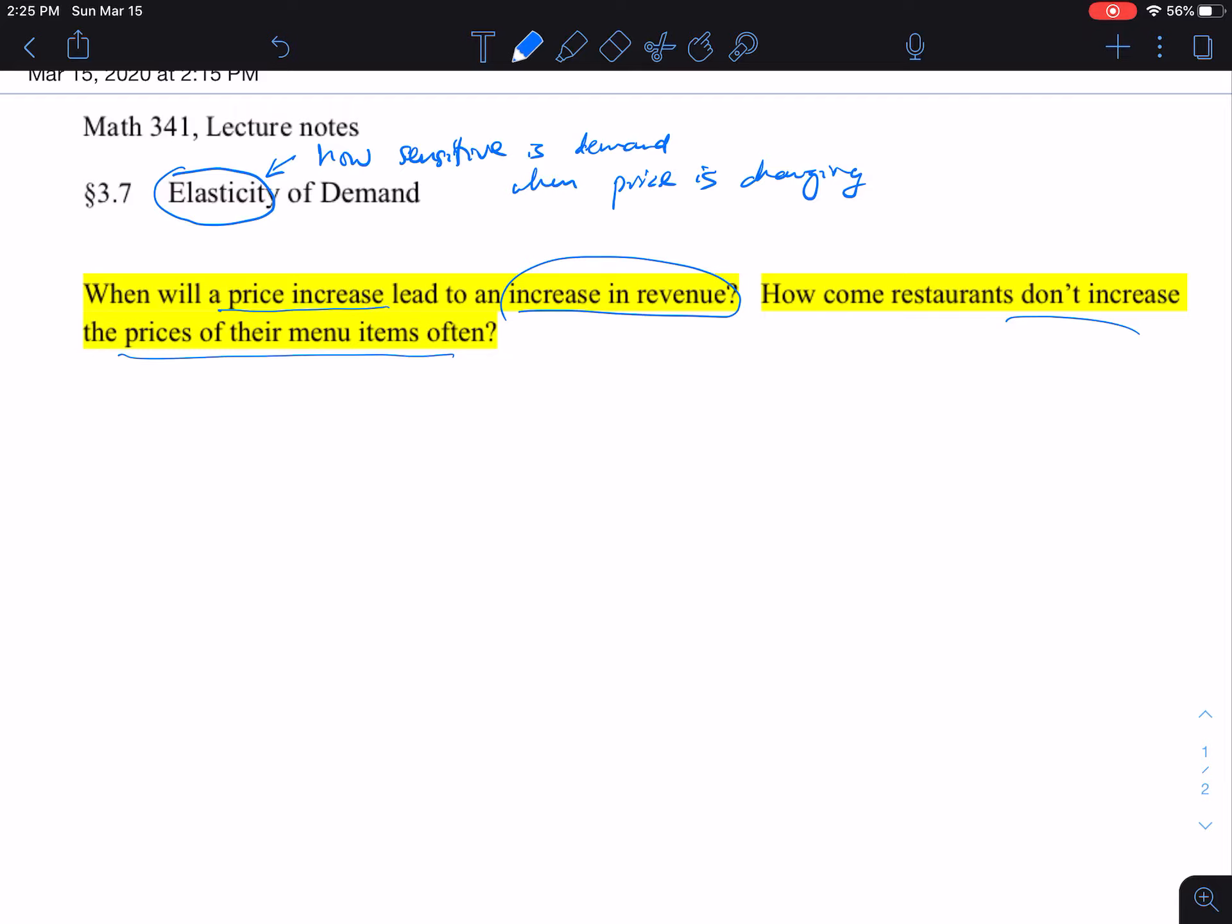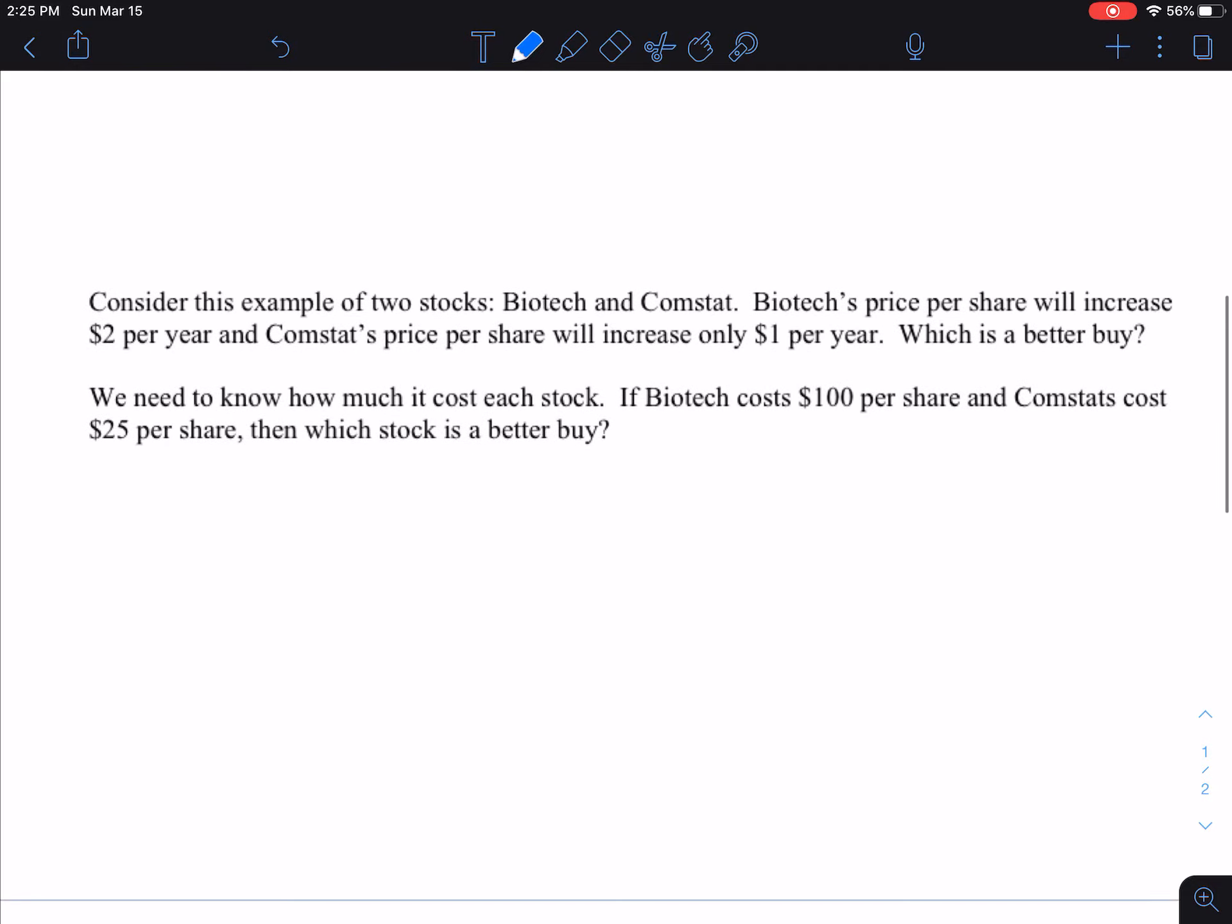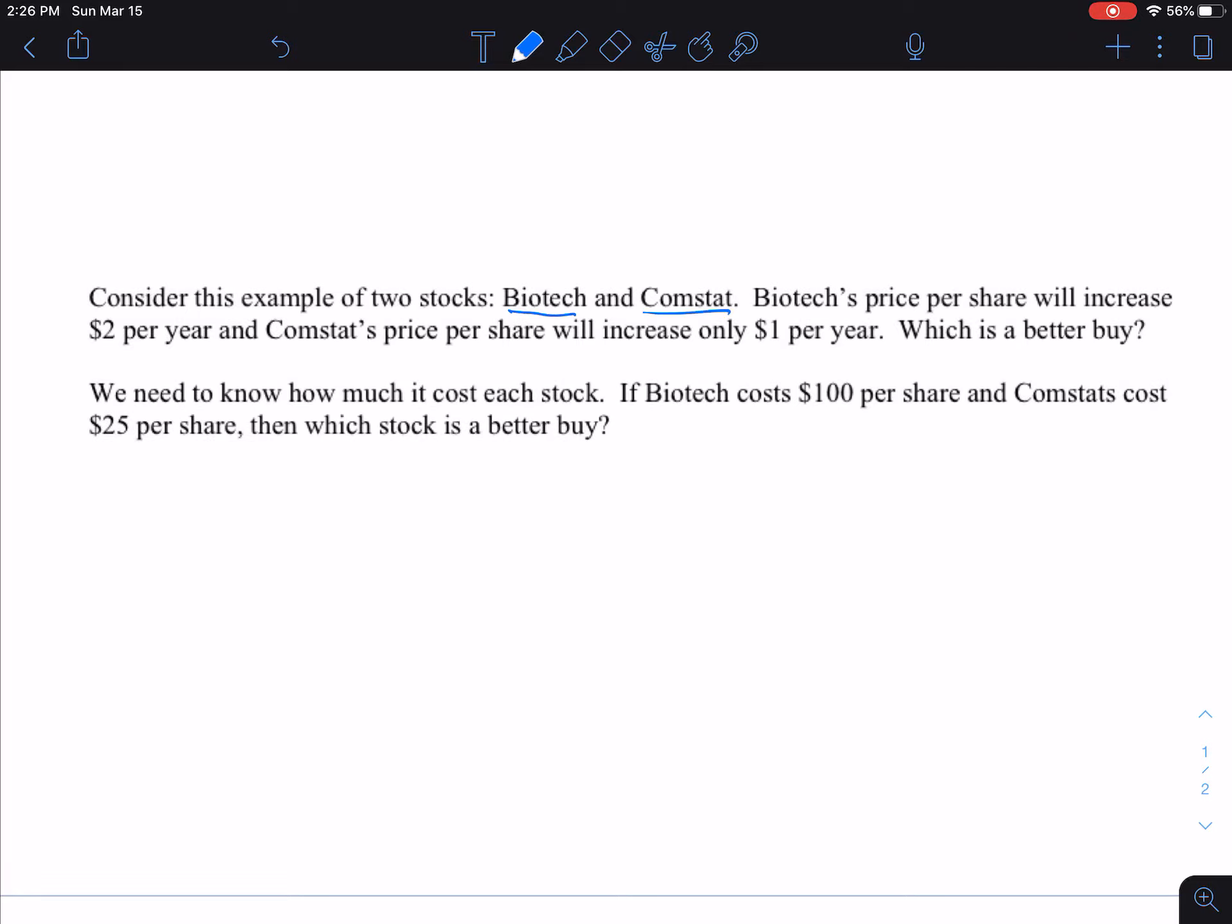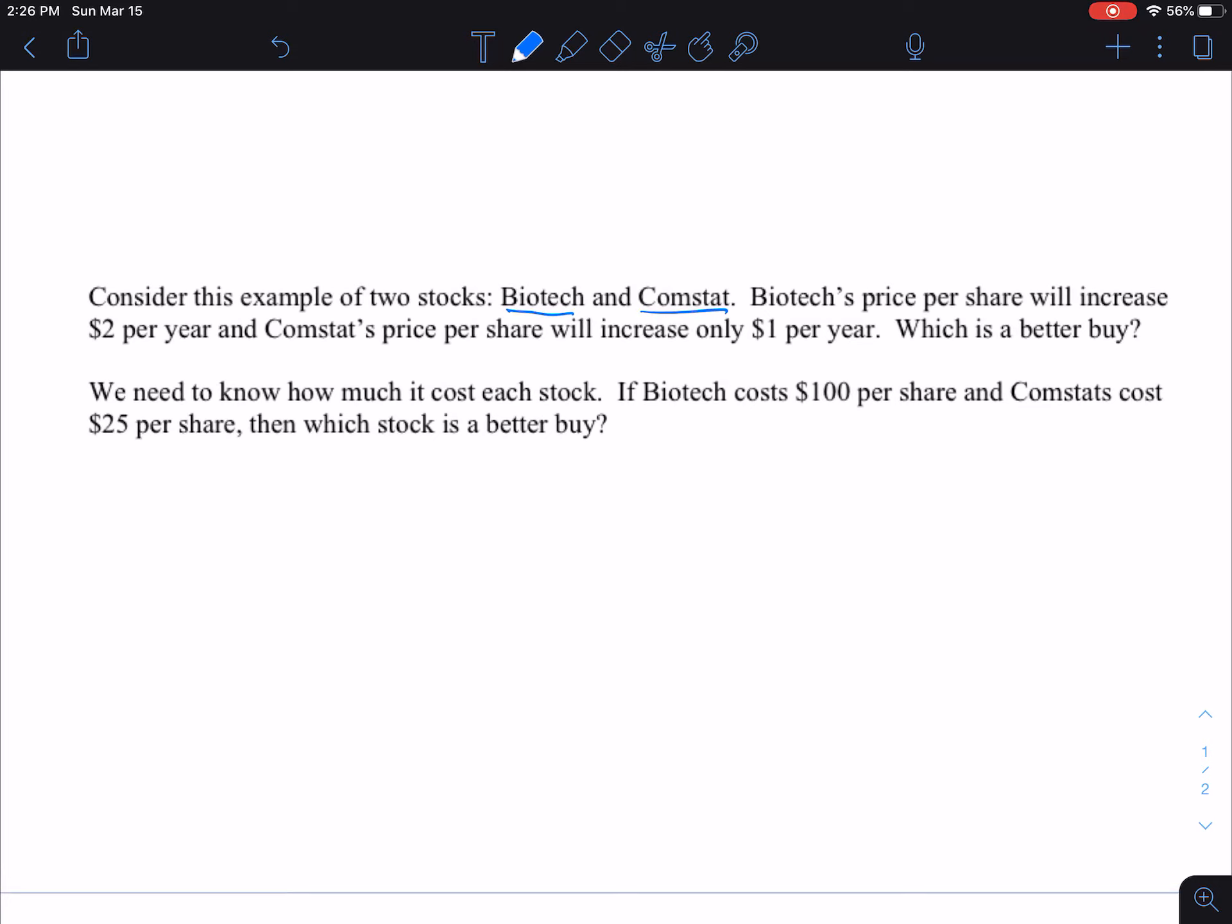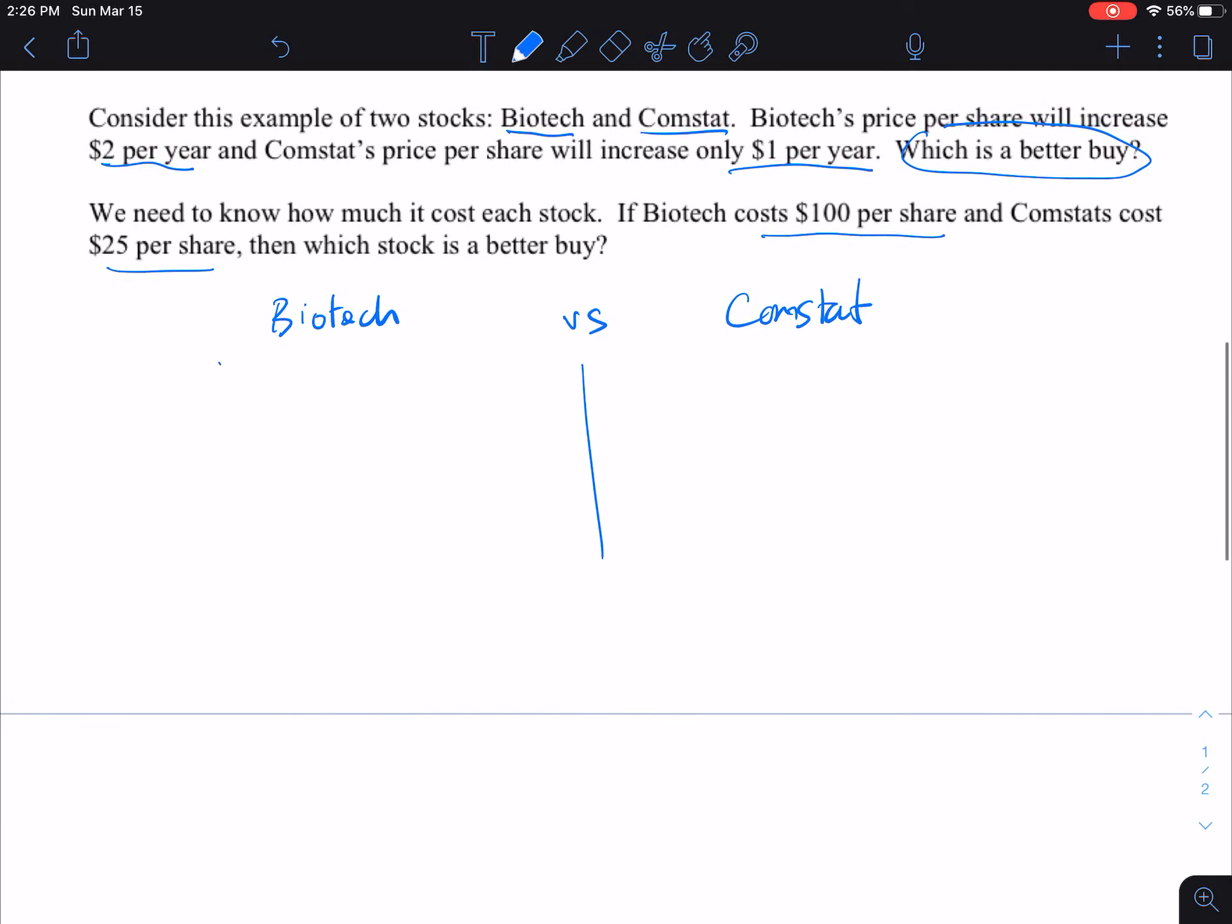To go further with this, we want to introduce another concept that leads to elasticity. Consider this example first: we have two different stocks, Biotech and Comstat. We know that the share for Biotech is increased by $2 per year and Comstat's price is increasing by $1 per year. Our goal is which one is better to invest in. To answer this question, it would be good to know how much is the cost per share for each type of stock.